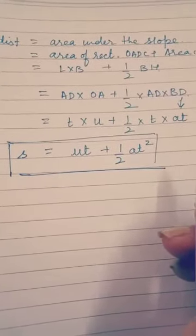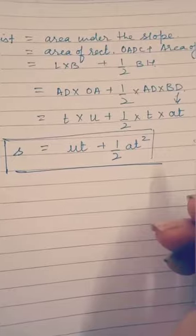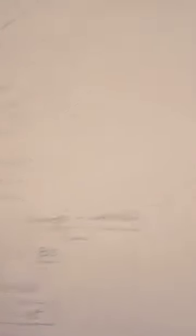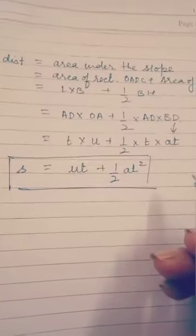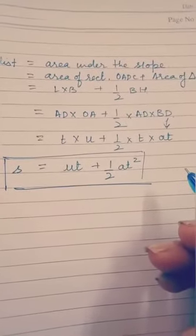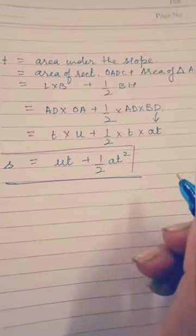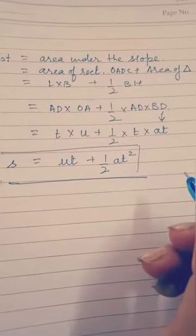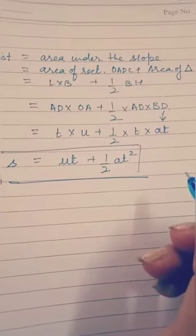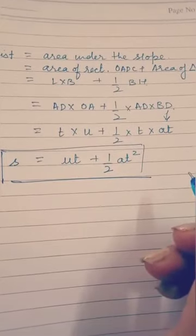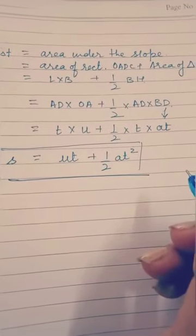So we have derived two equations of motion: V minus U equals AT and S equals UT plus half AT square. In the next segment, we will be deriving the third equation, that is V square equals U square plus 2AS.